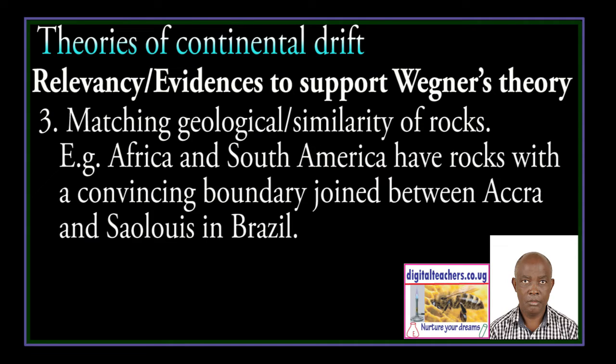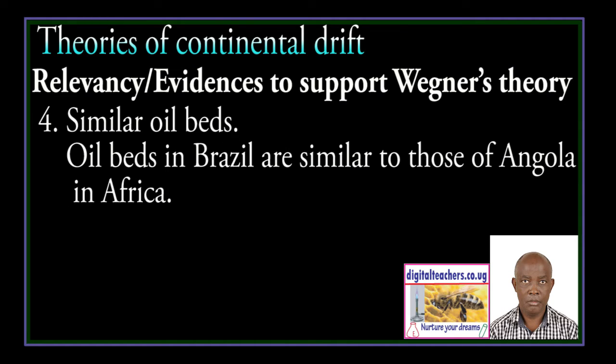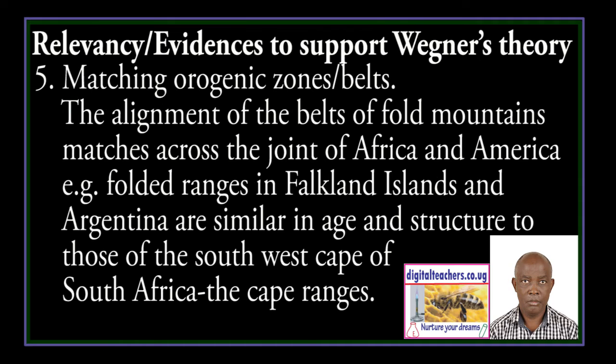Matching geology and similarity of rocks: Africa and South America have rocks with a convincing boundary joined between Accra and Sao Luis in Brazil. Similar oil beds: oil beds in Brazil are similar to those of Angola in Africa. Matching orogenic zones or belts: the alignment of belts of folded mountains matches across the joint of Africa and America. For example, the folded ranges in Falkland Island and Argentina are similar in age and structure to those of the South West Cape of South Africa — the Cape ranges.